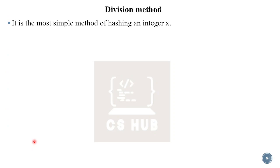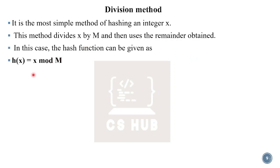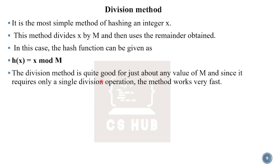Division is the most simple method of hashing an integer. We divide the integer x by m and use the remainder — that is, the modulo operation. The remainder is the storage location. The hash function is h(x) = x mod m, where x is the key. The division method requires only a single division operation, so it works very fast.